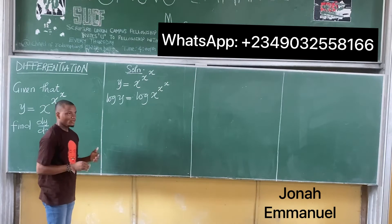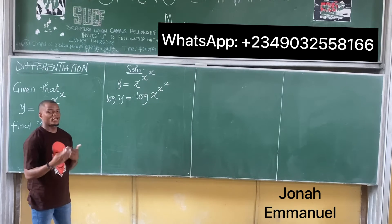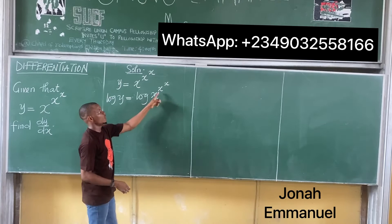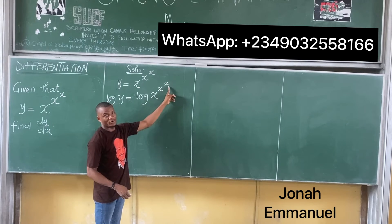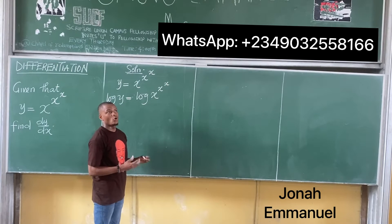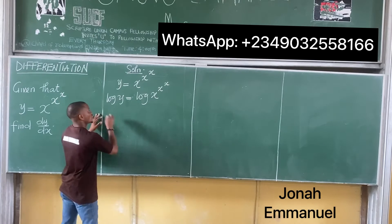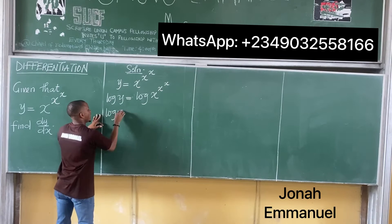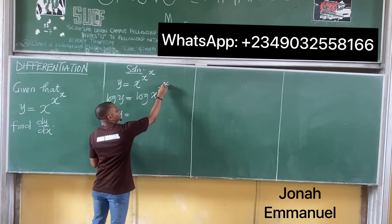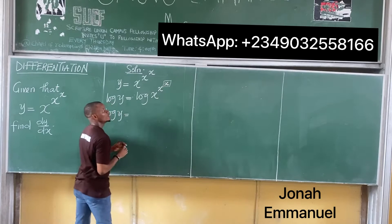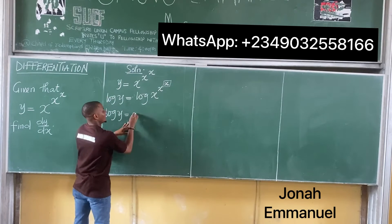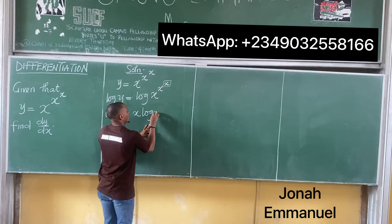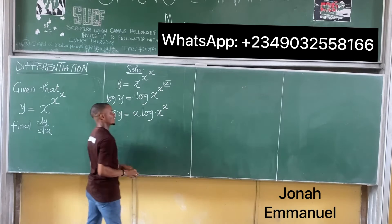Now, from the laws of logarithms, the power comes down. But in this case, only the last power comes down and not the one before it. So only this outer x comes down, giving us log y equal to x times log(x^x).